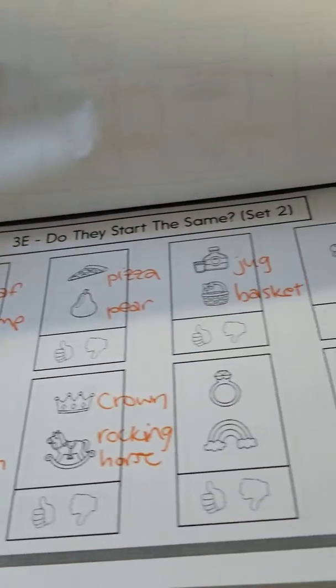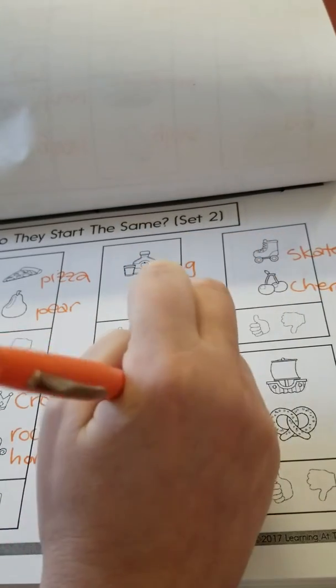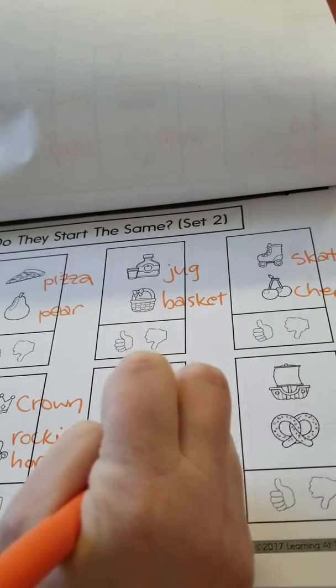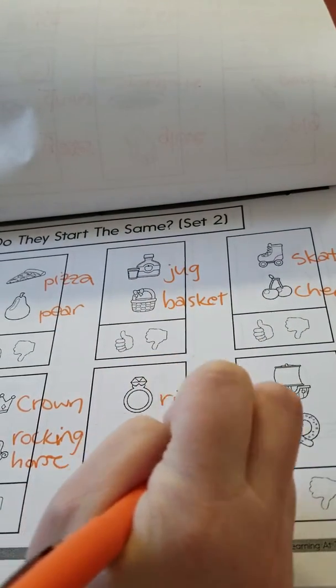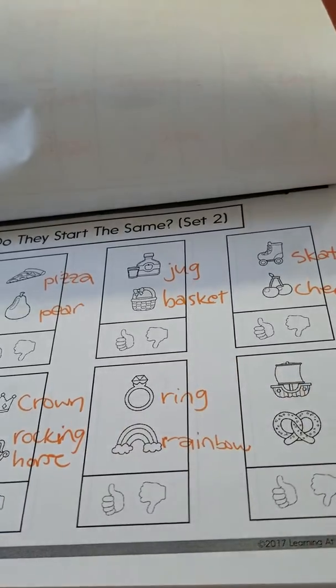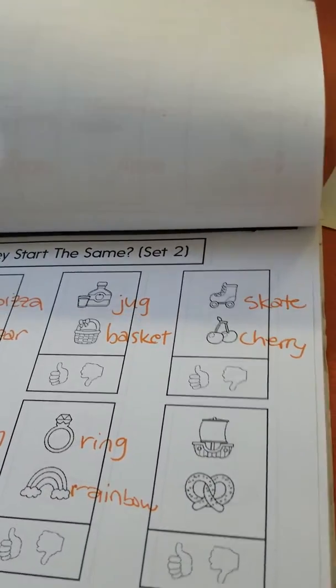We have ring and rainbow. Then we have ship and pretzel.